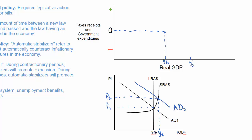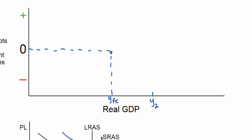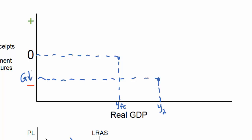Without any change in the law, government spending on things like unemployment and welfare payments will fall as national income increases to Y2. Clearly, fewer people will be unemployed due to the higher level of aggregate demand and output, and fewer people will be living at a very low income level requiring welfare payments. So government expenditures decrease as national income increases. On the other hand, since most modern economies employ progressive marginal income taxes, tax revenues will increase as national income increases automatically – taxes increase and government spending decreases without any change in the law.